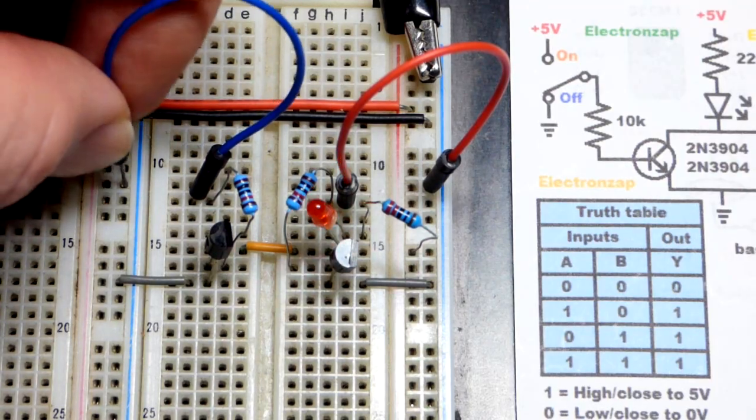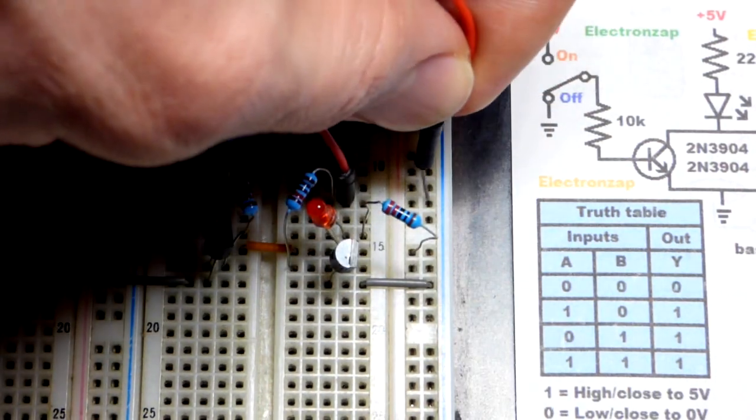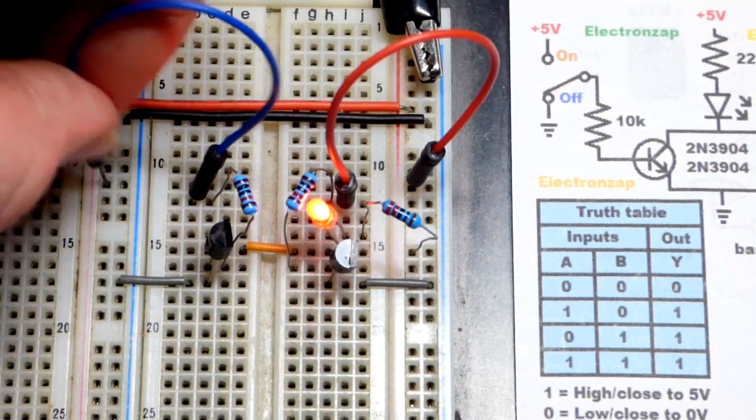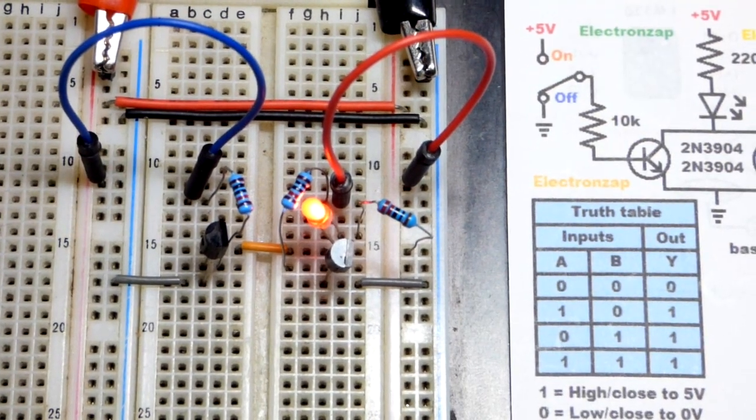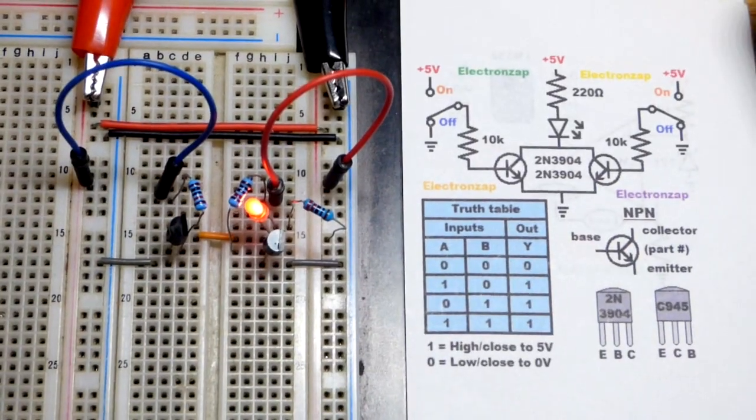Now we got the high input for one. LED turns on. High input for the other. LED turns on. Or we could have all inputs high. Doesn't matter. Just as long as at least one of them is high.